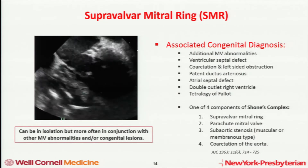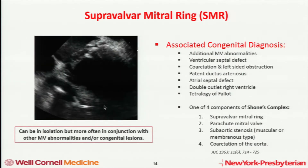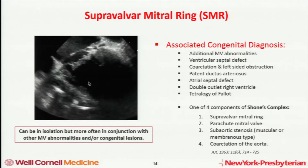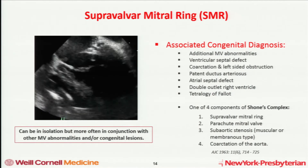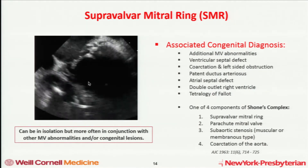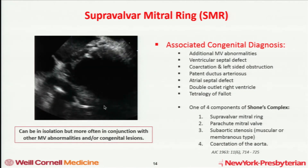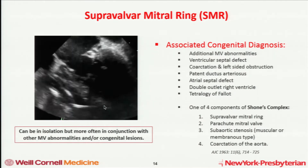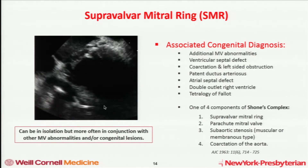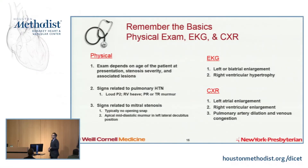Even though you can see this in isolation, you often see it with many other associated congenital diagnoses. In addition to the mitral abnormalities, you can have it with VSDs, coarctation, PDA, ASDs, and occasionally more complex forms of congenital heart disease. In the adult world, when we see supravalvular mitral rings, it's often in the context of Shone's complex — and the next talk will be on Shone's complex — so we won't steal that thunder.